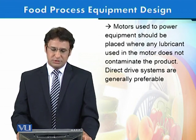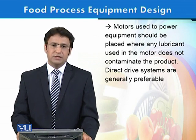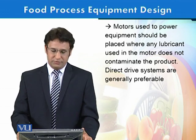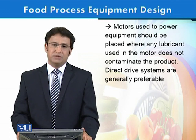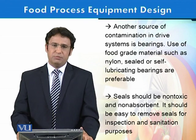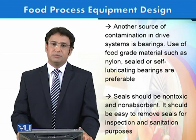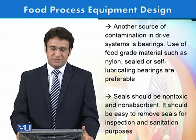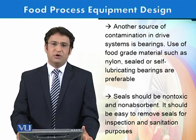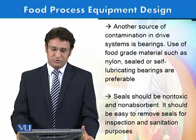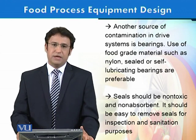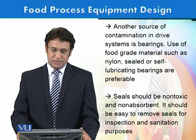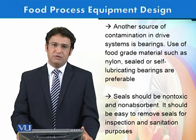For example, the motors used to power equipment should be positioned so that lubricants do not come into contact with food. They must be placed away and should ideally be direct drive systems, which are better than having open motors or using lubricants, because during maintenance, cleaning, or repair, contaminants might be introduced. Bearings in the system are another source of contamination as they are generally lubricated and those lubricants or oils can get into food. The solution is to use food grade materials such as nylon, which require much less lubrication, and bearings should be sealed and self-lubricating.